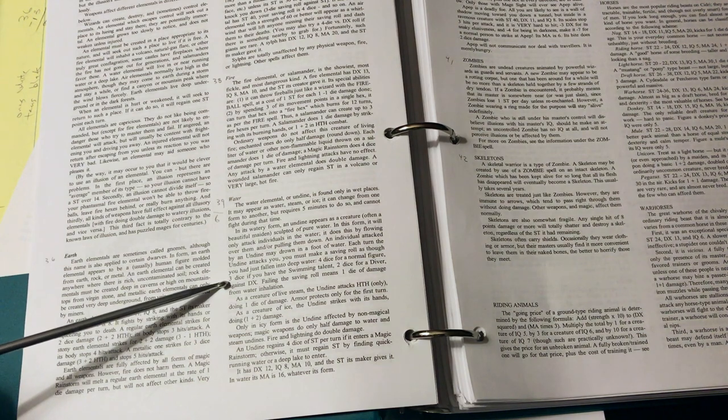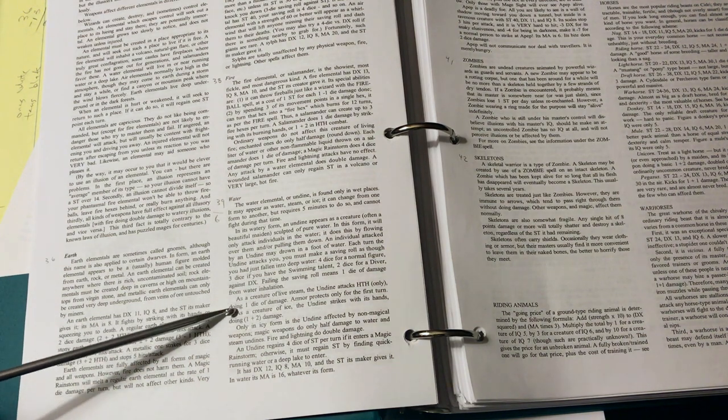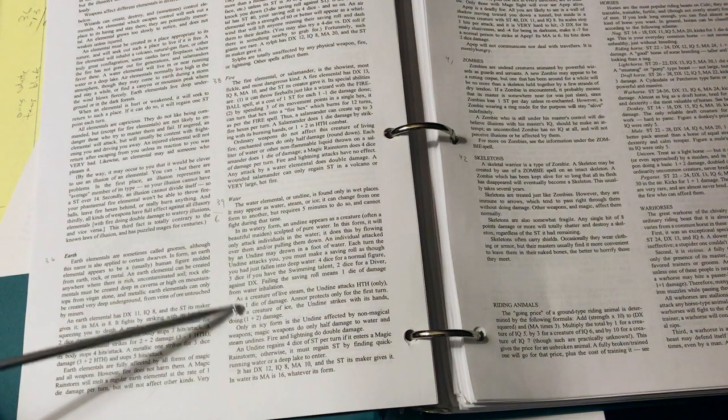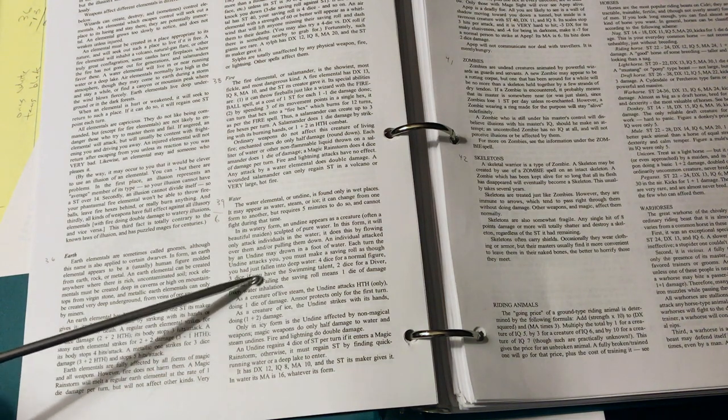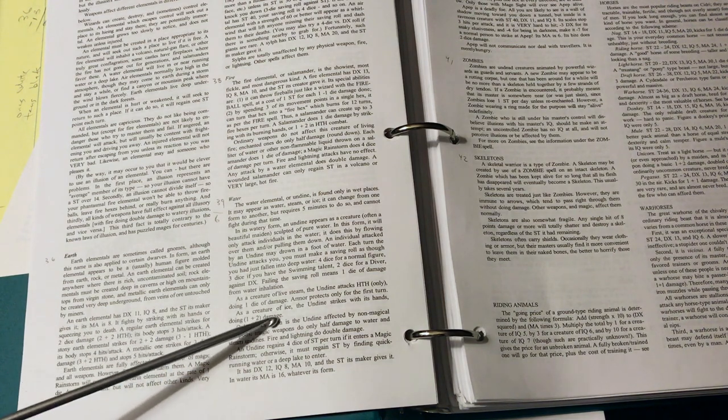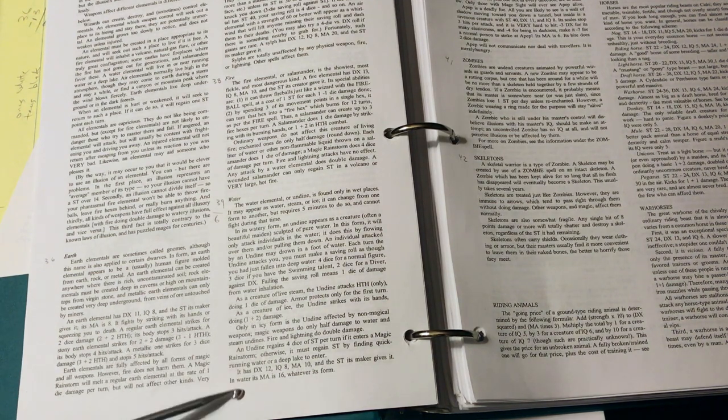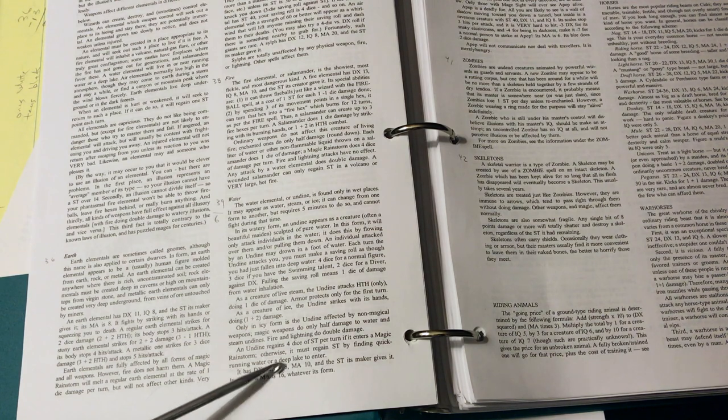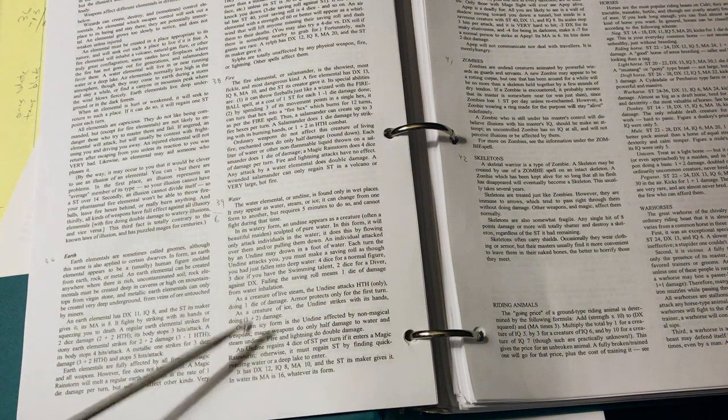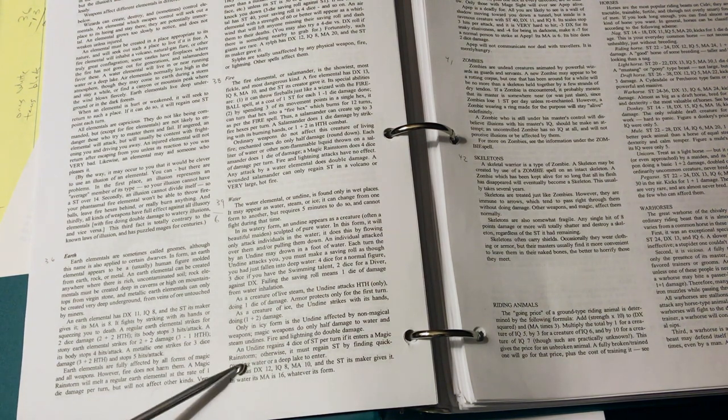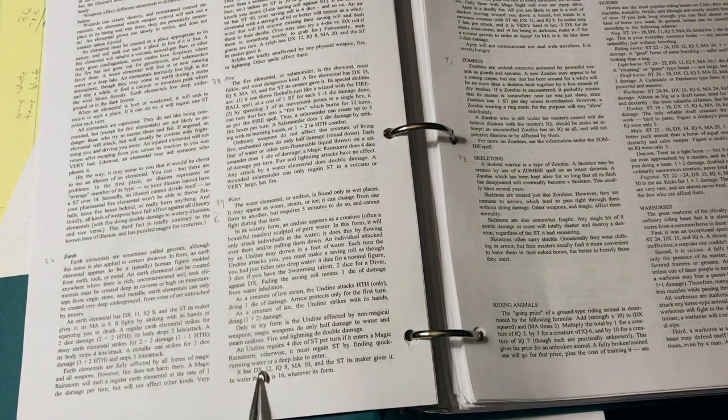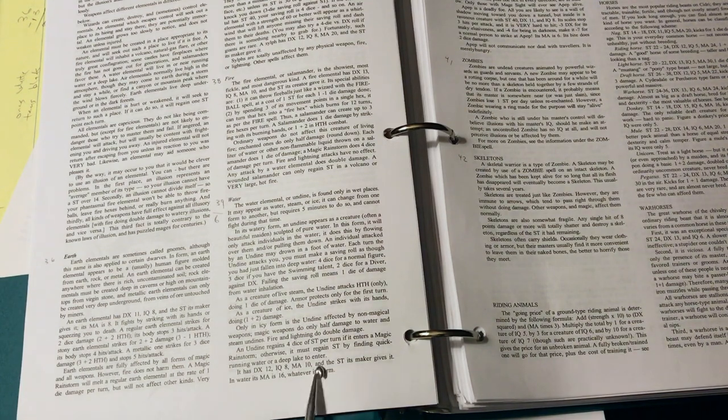It explains what happens if it takes the form of steam or of ice. It also talks about a magic rainstorm. What's interesting about the mention of the magic rainstorm is - it gives it stats down here.